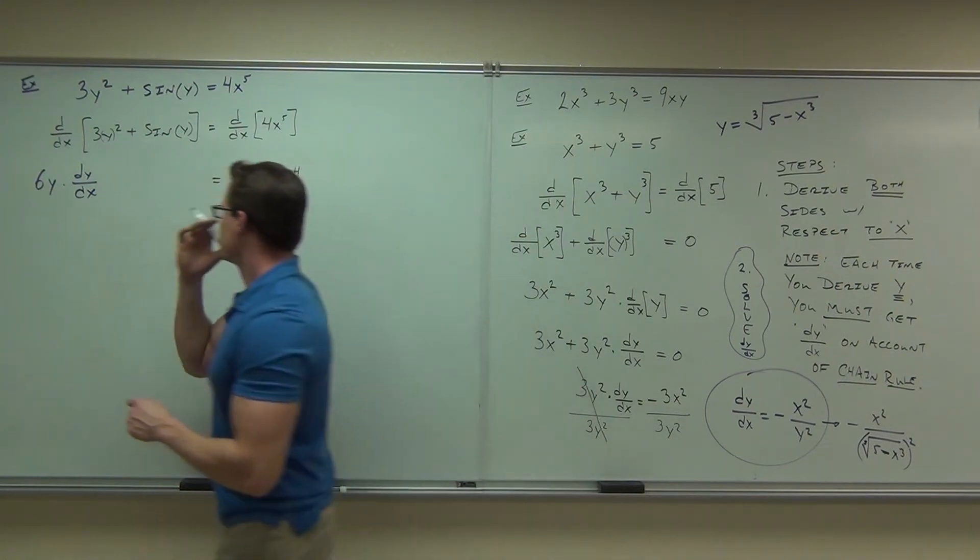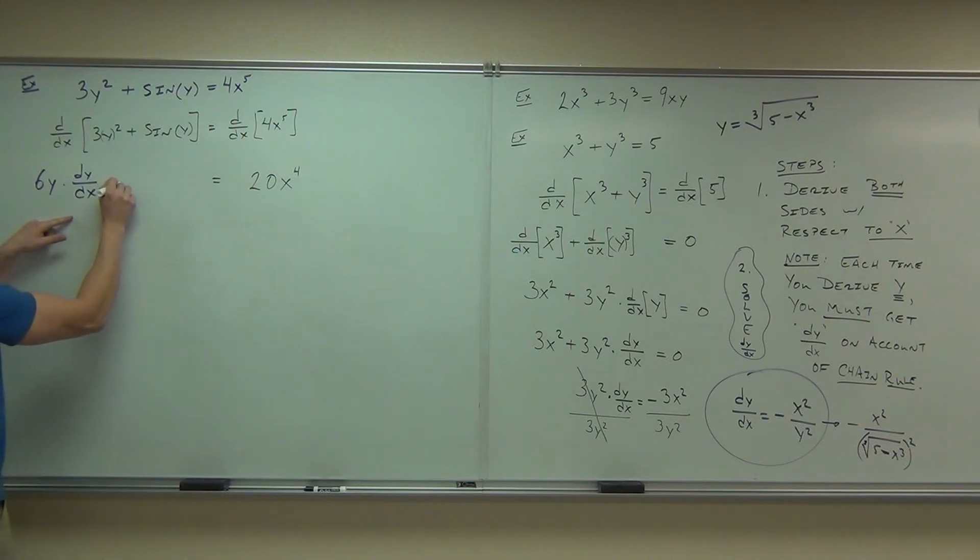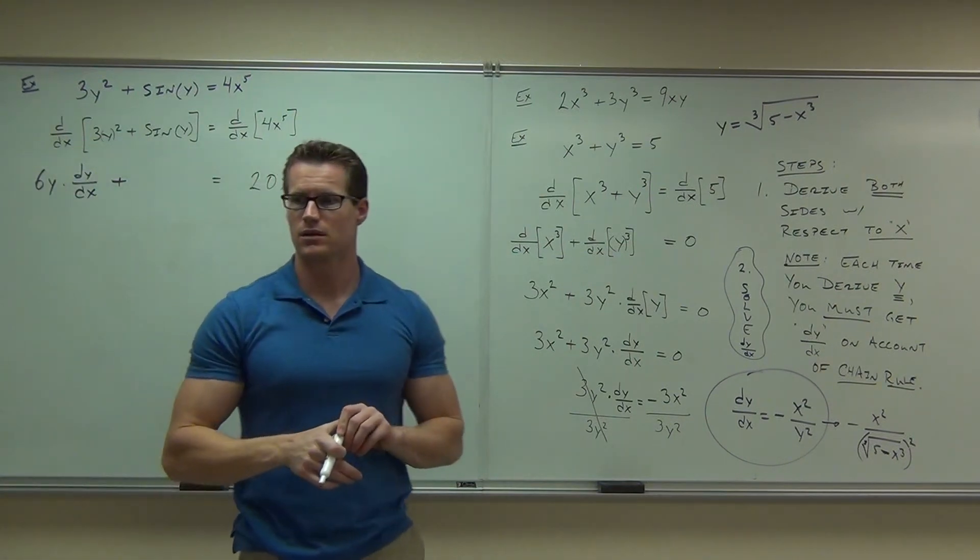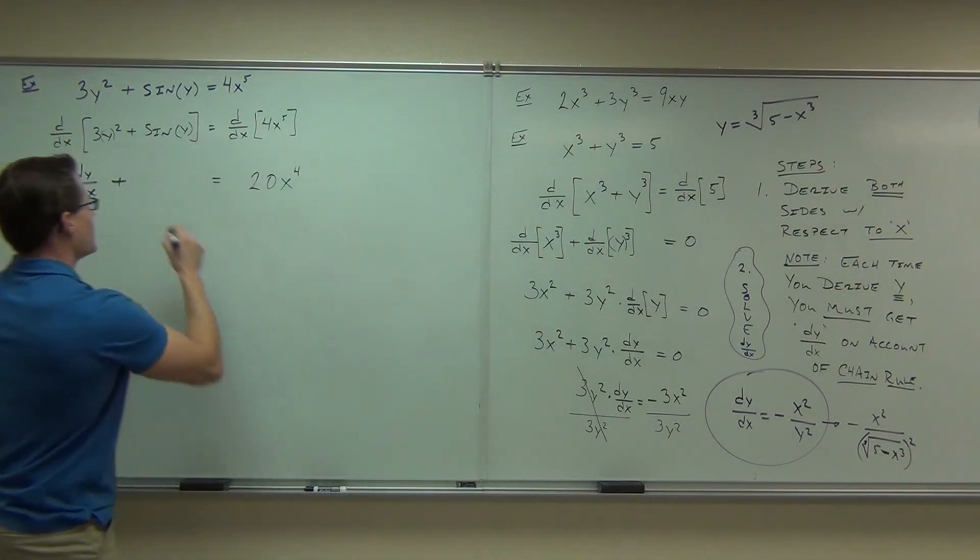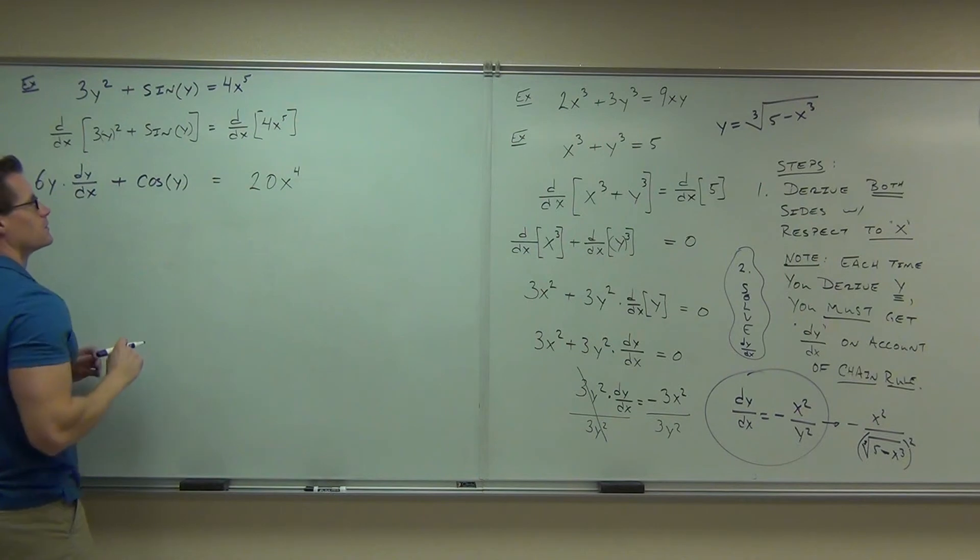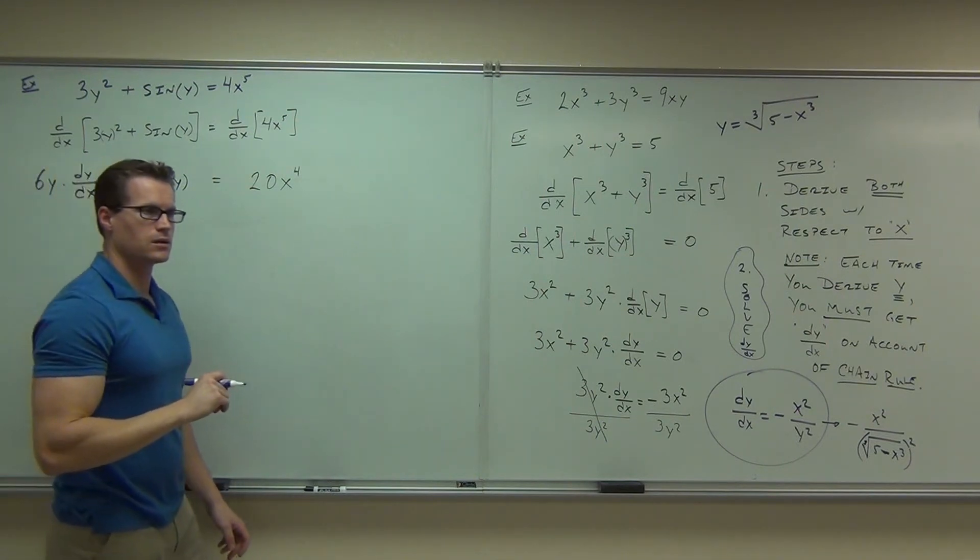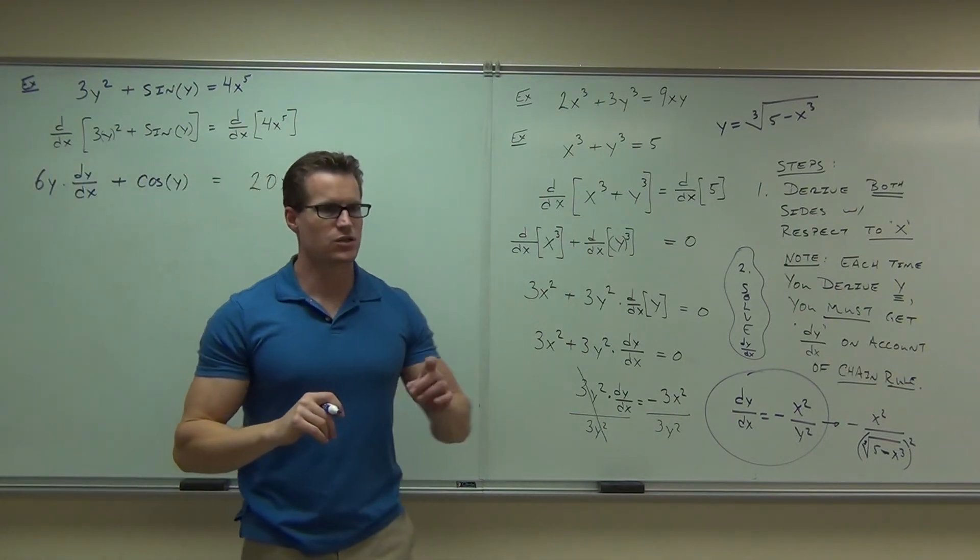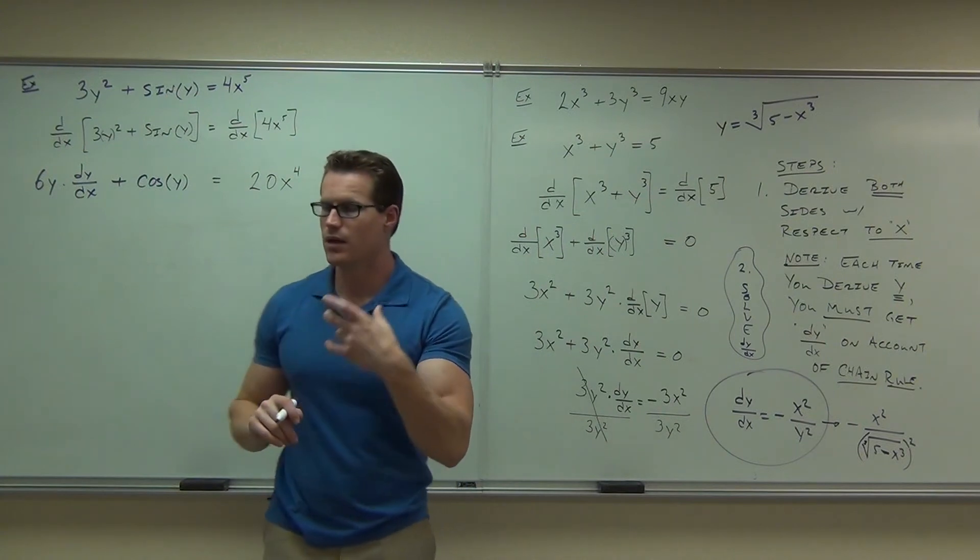So we need that. Plus, because we have a plus here. What's the derivative of sine? Cosine. Cosine, okay. So we have cosine of y. Is that it? Times dy dx. You took a derivative of something that involved the y. That means dy dx.